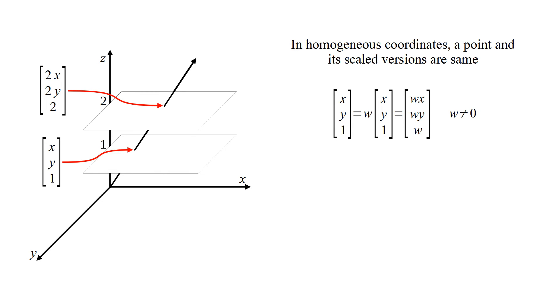In homogeneous coordinates, a point and its scaled versions are same. They are the same point on different z-planes.